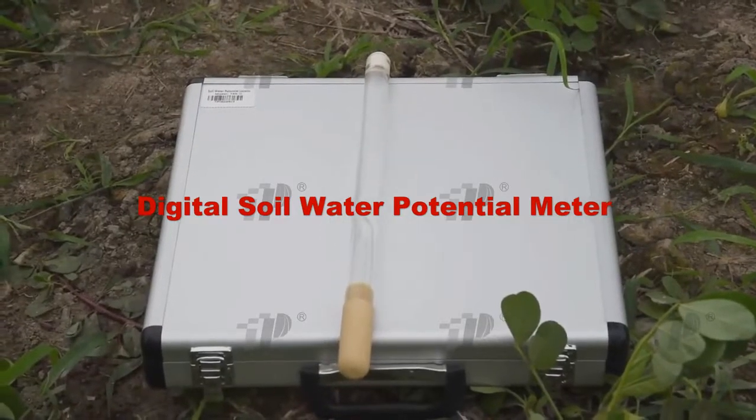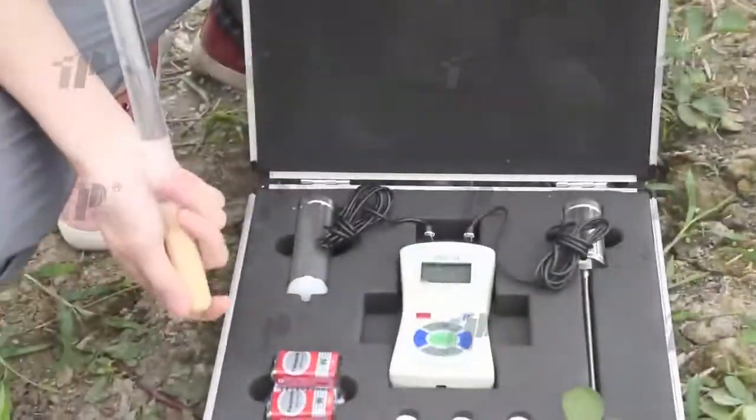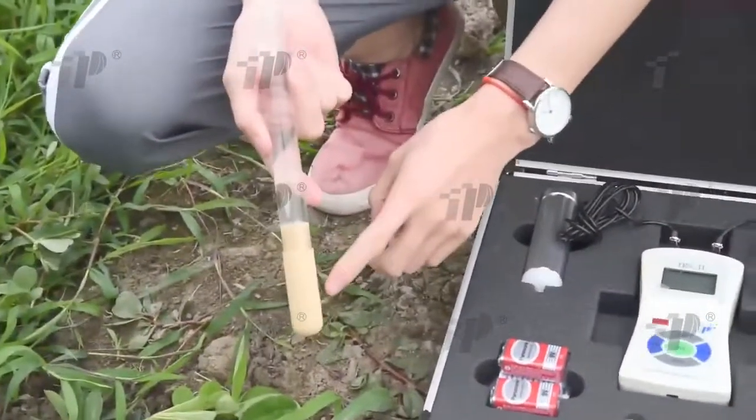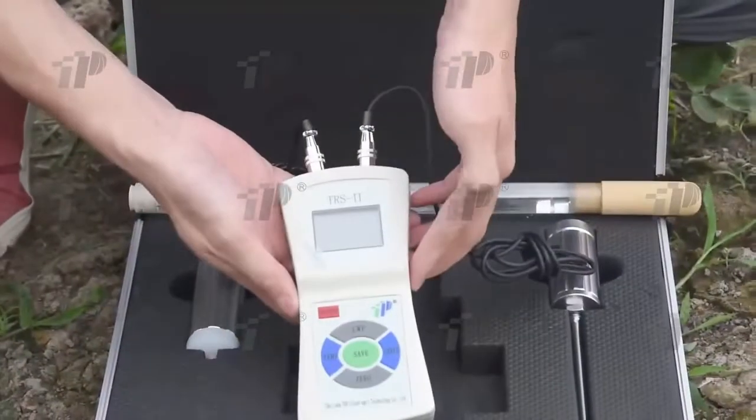This video is about how to use a soil digital water temperature measuring instrument. Before using, put the water potential probe (ceramic probe) in water for soaking more than 3 hours.